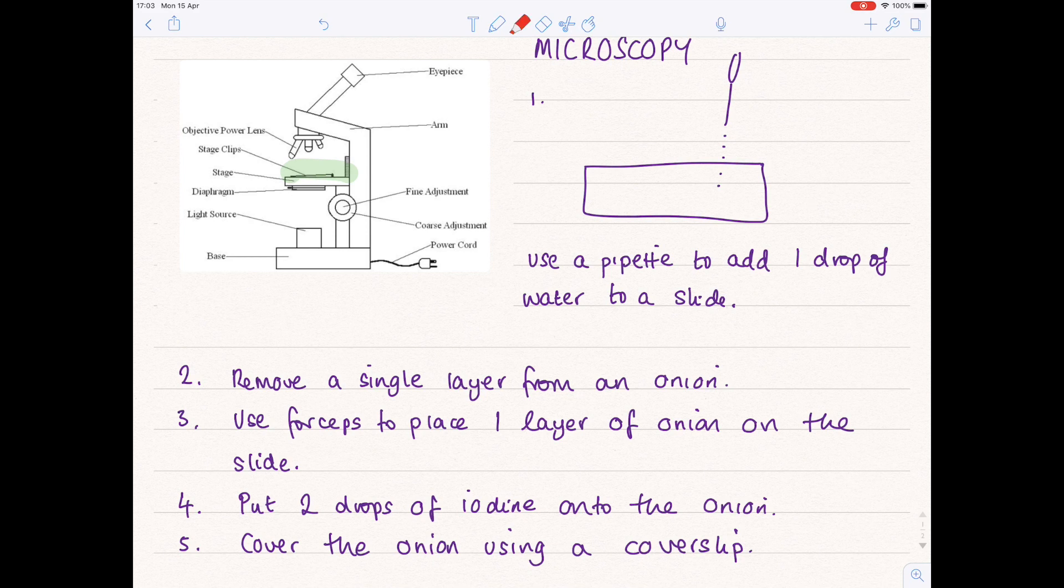Remember there are three different lenses: one, two, three. The shortest lens has the lowest magnification power, and you always start with the lowest magnification power first before building up to the stronger powers.